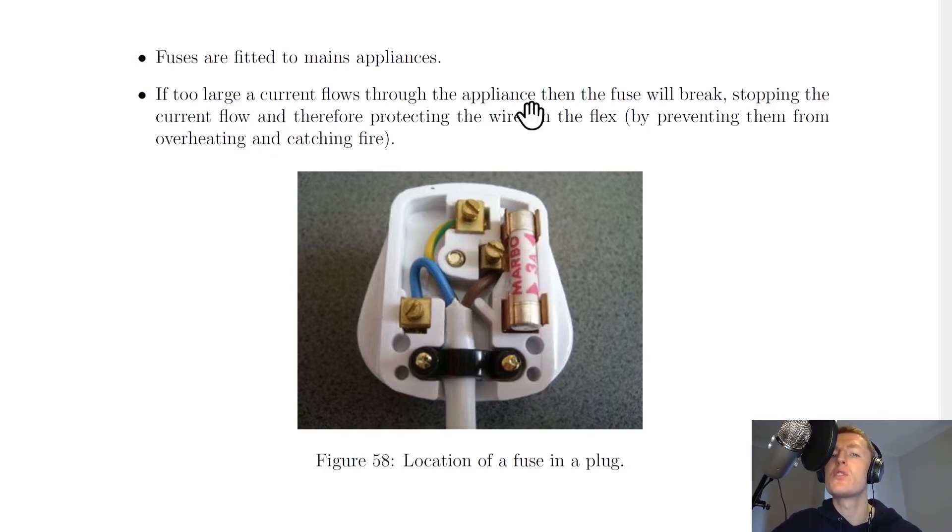If too large a current flows through the appliance, then the fuse will break, stopping the current flow and therefore protecting the wires in the flex by preventing them from overheating and catching fire.